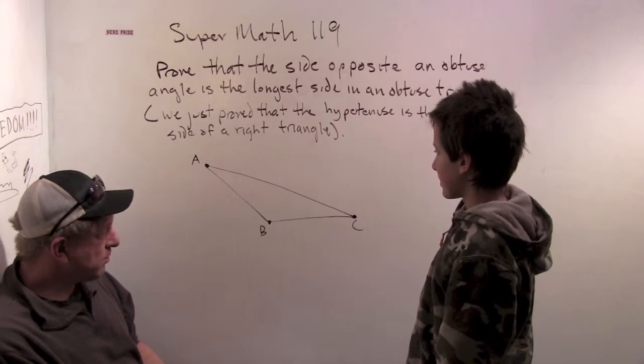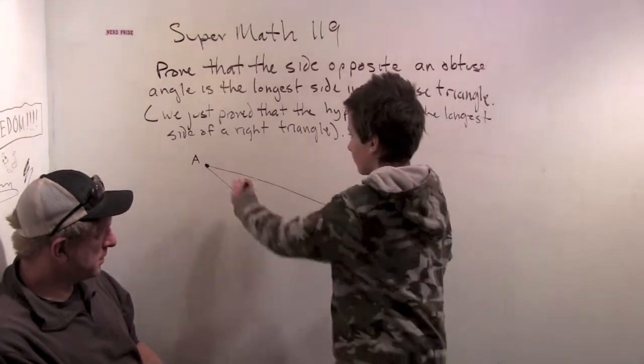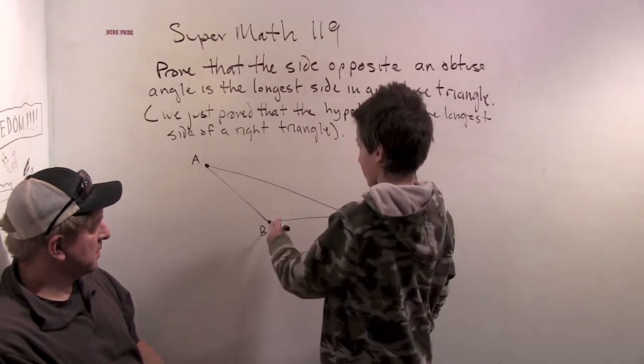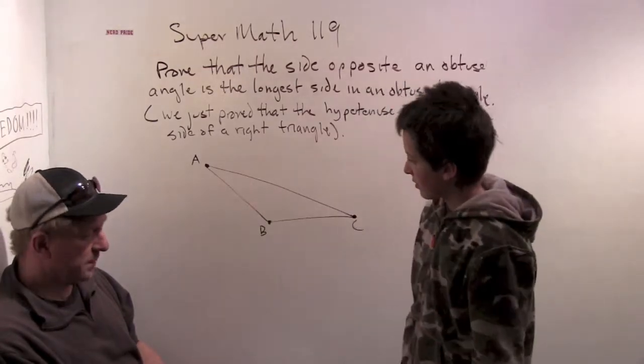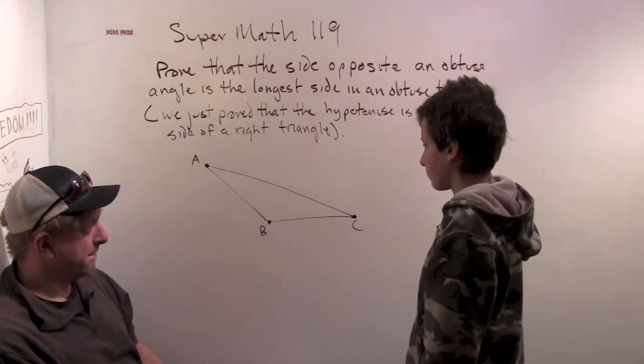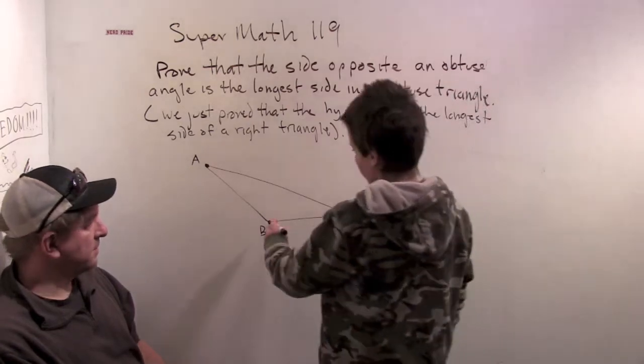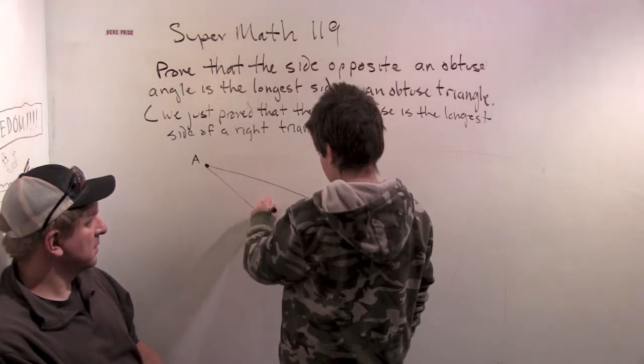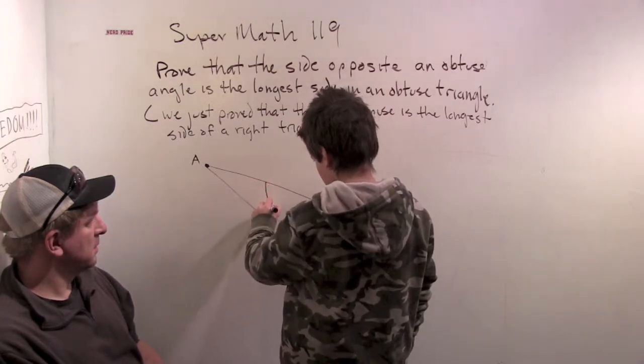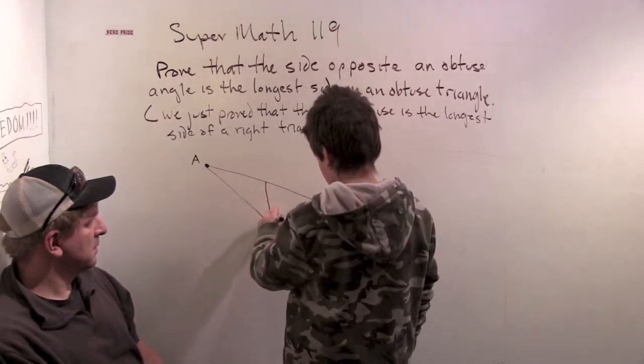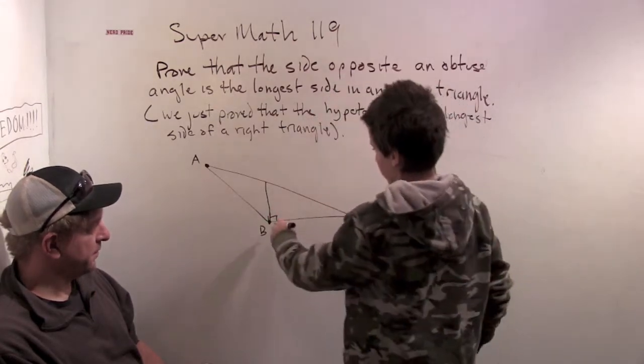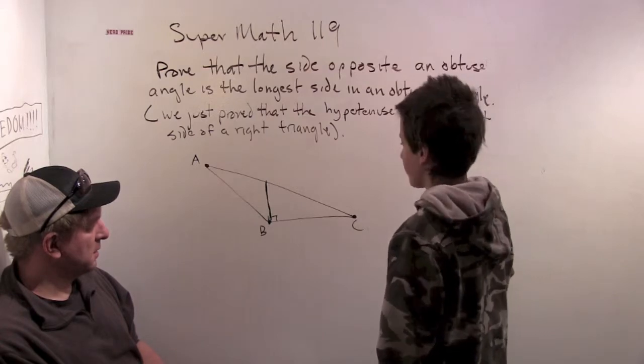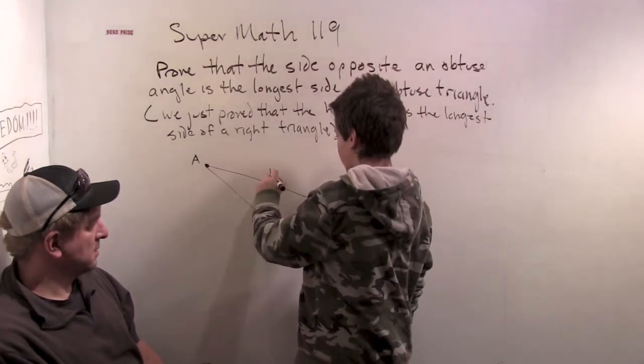Well, maybe we can split it up. We can prove that AC is longer than BC, and then we can prove AC is longer than AB. Okay, great. So I'm going to drop this perpendicular down here to make this right triangle. Cool. Then I'm going to call this point P. Call that point P.